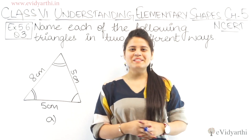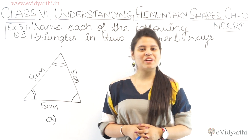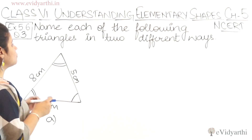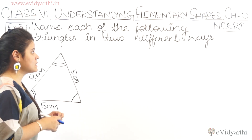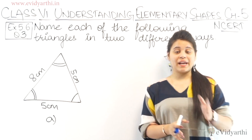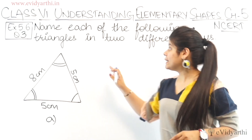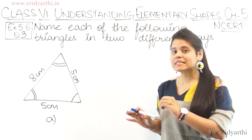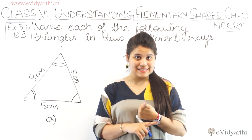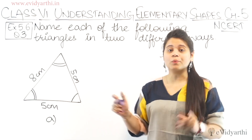Hello guys, this is Manasi with George, and now we are starting with question number 3 of exercise 5.6. In this question we have to name each of the following triangles in two different ways. We judge triangles either by their angles or by their sides.